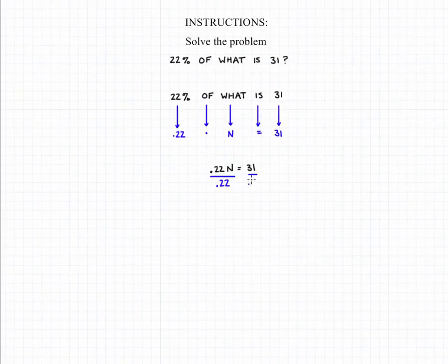Dividing both sides by 0.22 gives us our final answer: n is equal to 140.9.